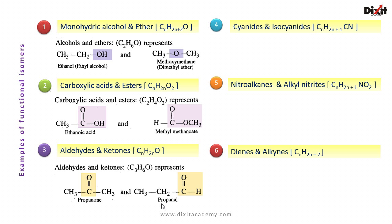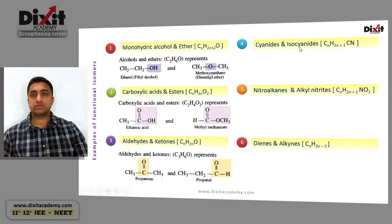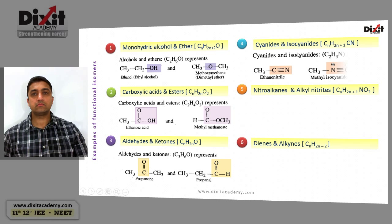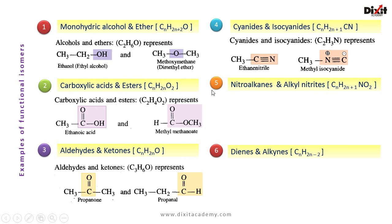Example 4: cyanides and isocyanides. They are represented by the same general formula CnH2n+1CN. In alkyl cyanides the functional group is cyanide; in alkyl isocyanides the functional group is isocyanide (isonitrile). The molecular formula C2H3N represents ethanenitrile and methyl isocyanide — they are functional isomers of each other.